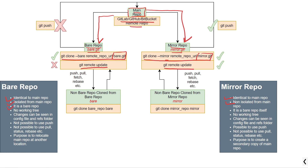A bare repository is a bare repository, and similarly, a mirror repo is also a bare repository. Because when you use the command git clone --mirror, it internally calls the --bare option first. Hence, both repositories will be a kind of bare repository.